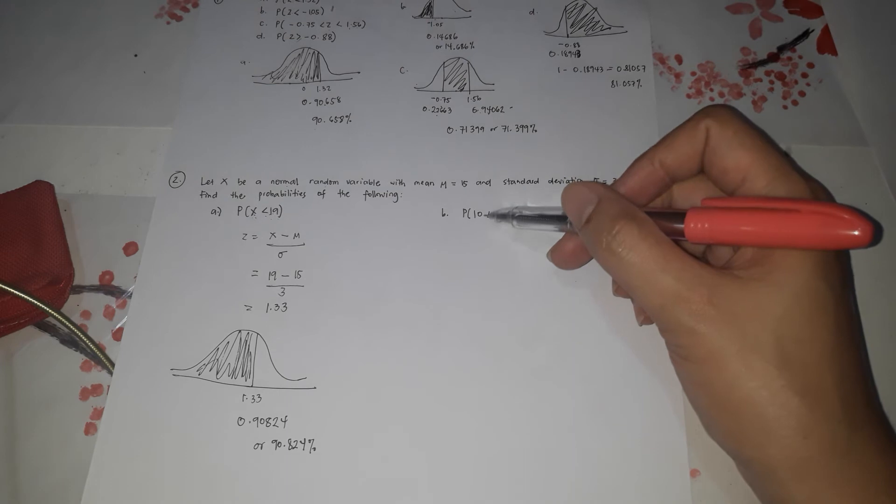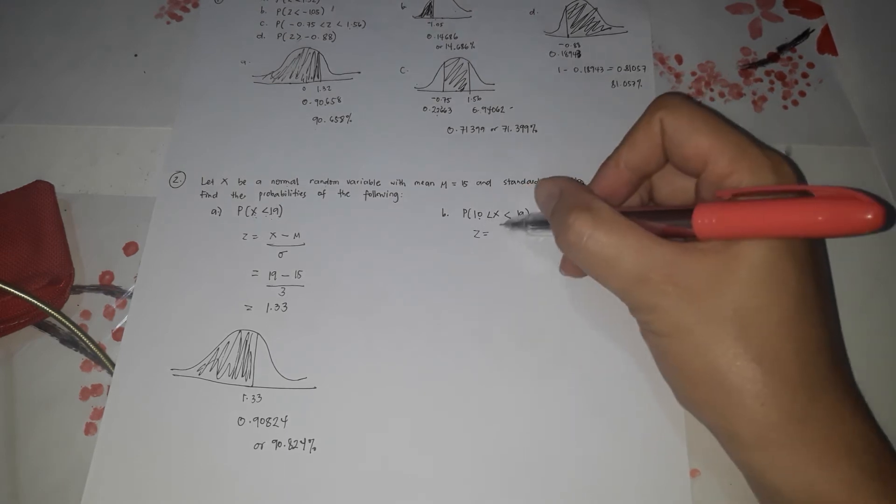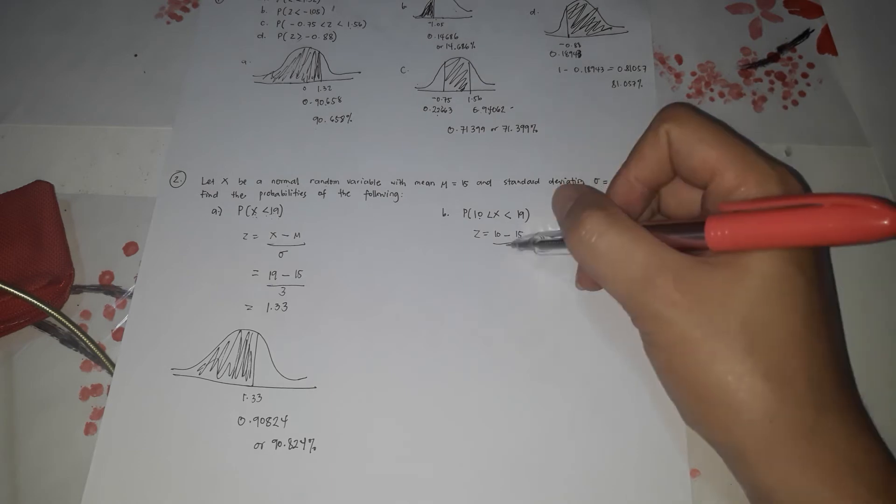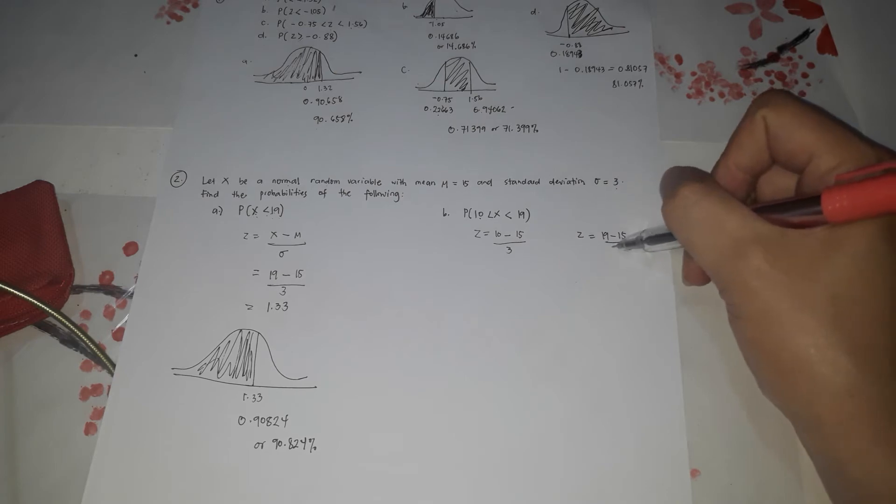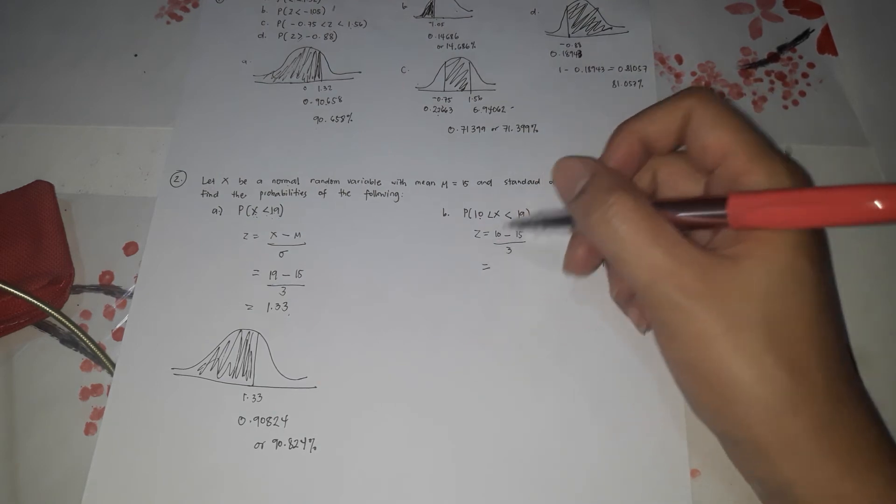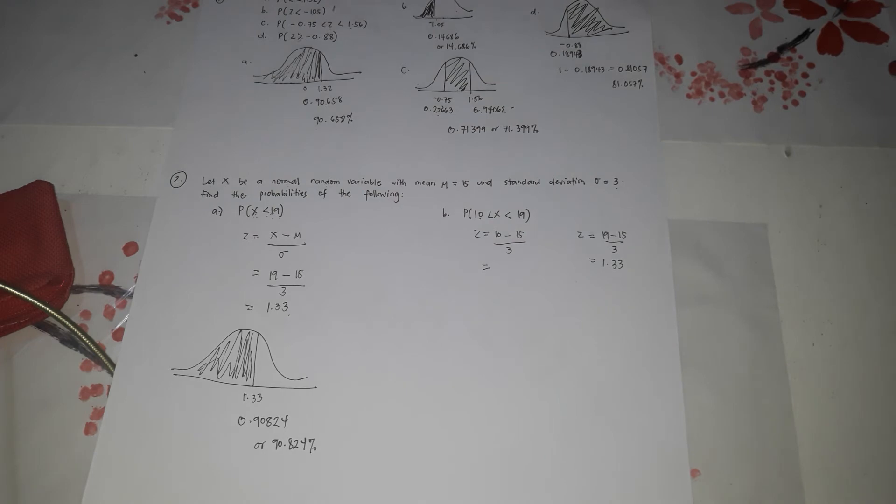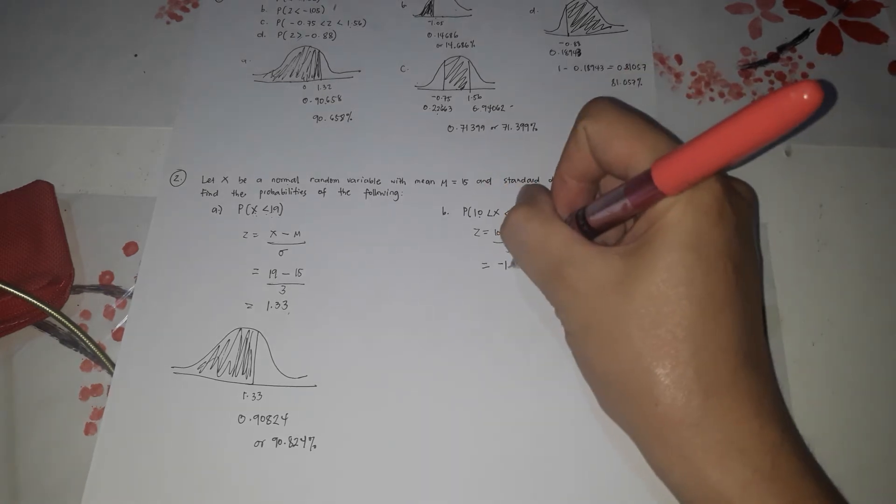Next. So P now is in between 10 and 19. So let's find 10 first. We make it z. So 10 minus 15 over 3. Then here at 19, it's 19 minus 15 over 3. We solved it already a while ago. 19, 1.33. For 10, it's 10 minus 15. That's negative 5. 10 minus 15 divided by 3. It's negative 1.67.